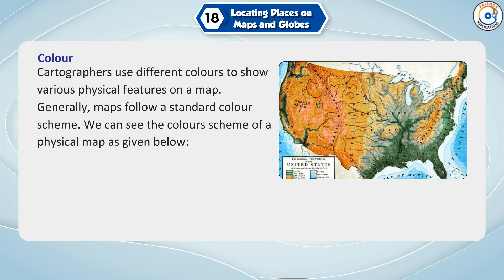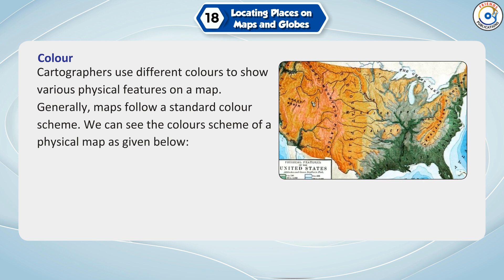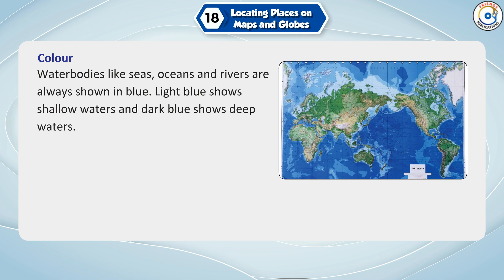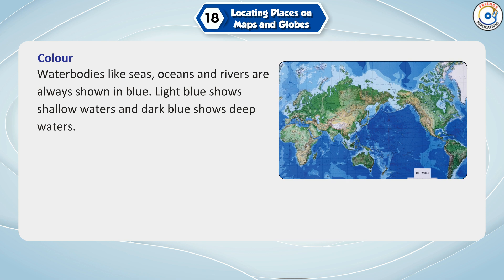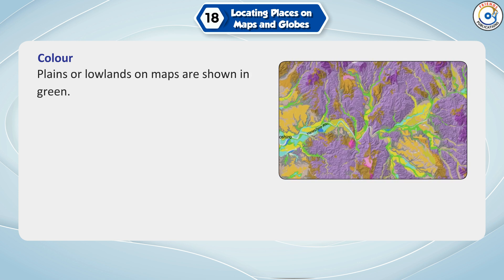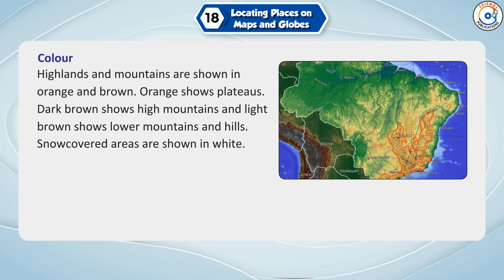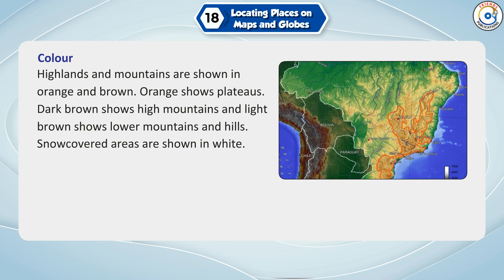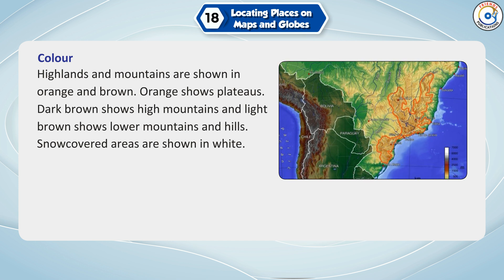Color: Cartographers use different colors to show various physical features on a map following a standard color scheme. Water bodies like seas, oceans and rivers are always shown in blue — light blue for shallow water and dark blue for deep waters. Plains or low lands are shown in green. High lands and mountains are shown in orange and brown — orange for plateaus, dark brown for high mountains, and light brown for lower mountains and hills. Snow-covered areas are shown in white.